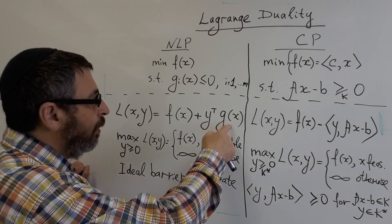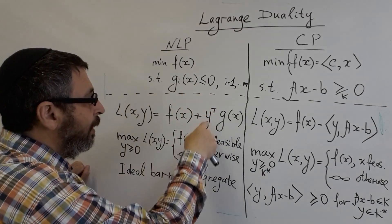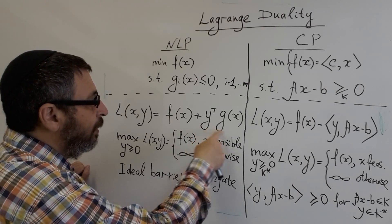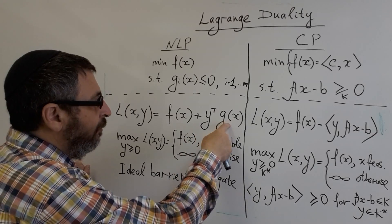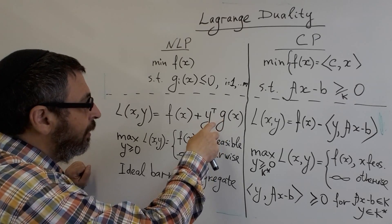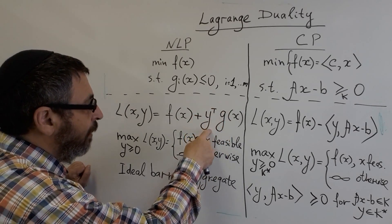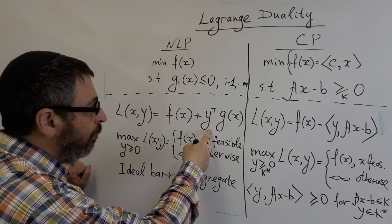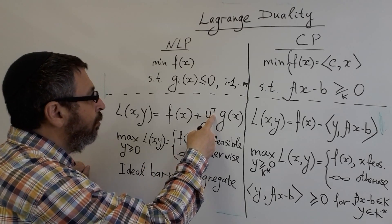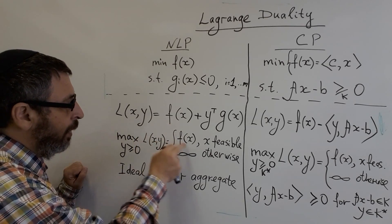How can we see it? If X is feasible, all constraints are less or equal to zero and Y elements are non-negative, then every component in YI GI is non-positive. So if we want to maximize it with respect to Y, the maximum will be zero and can be easily achieved just choosing Y equal to zero. So the only part that remains which doesn't depend on Y is F.